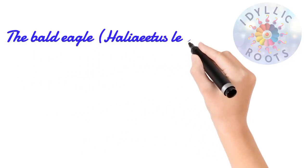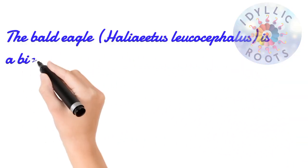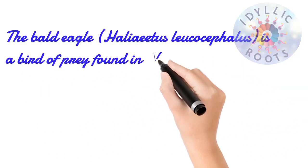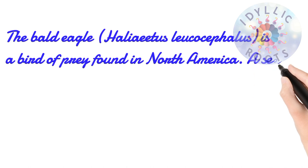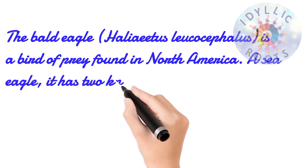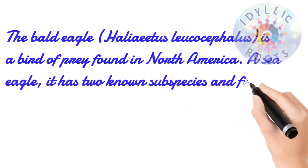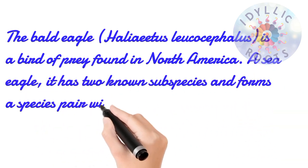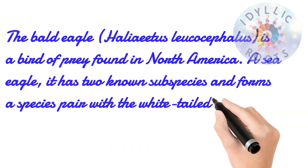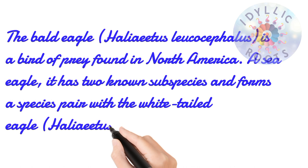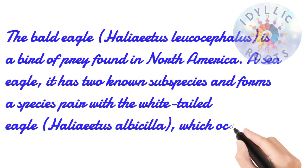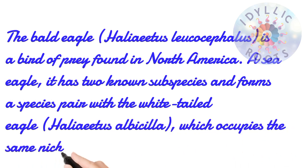The bald eagle, Haliaeetus leucocephalus, is a bird of prey found in North America. A sea eagle, it has two known subspecies and forms a species pair with the white-tailed eagle, Haliaeetus albicilla,